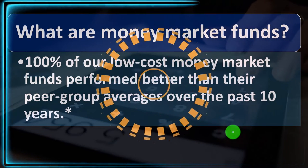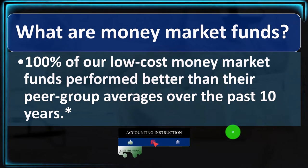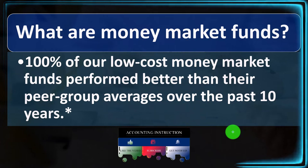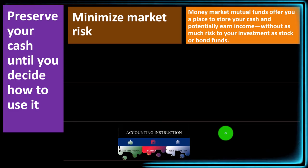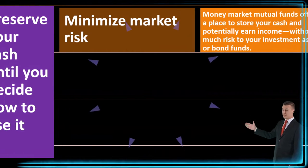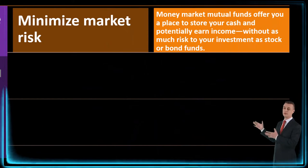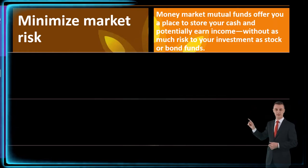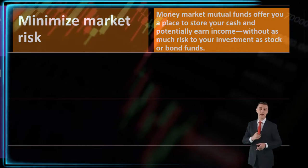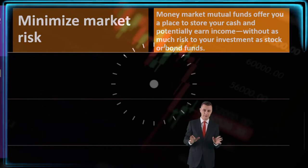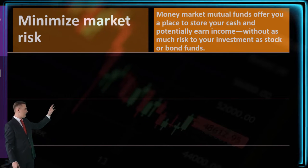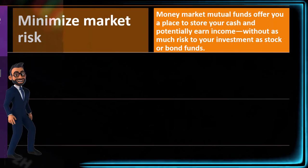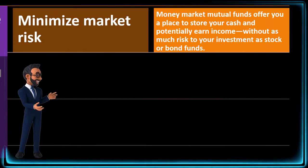Remember we're looking at this from Vanguard's standpoint, but you can apply these concepts to money market funds in general. According to Vanguard, 100% of their low-cost money market funds perform better than their peer group averages over the past 10 years. Money market mutual funds offer you a place to store your cash and potentially earn income without as much risk as stock or bond funds. If you put your money into stock or bond funds, they're often still fairly liquid, but there can be restrictions depending on the type of fund.